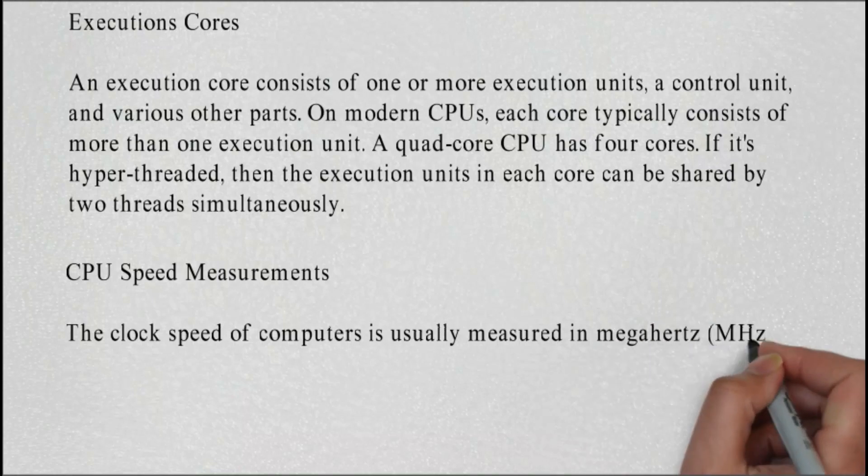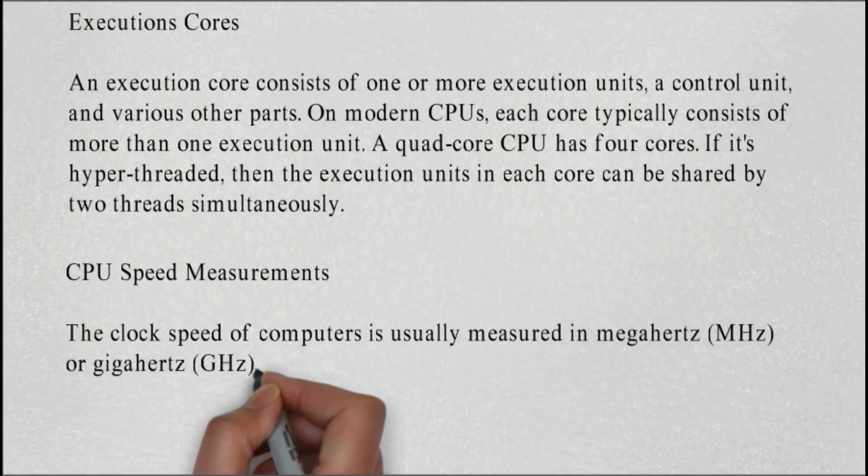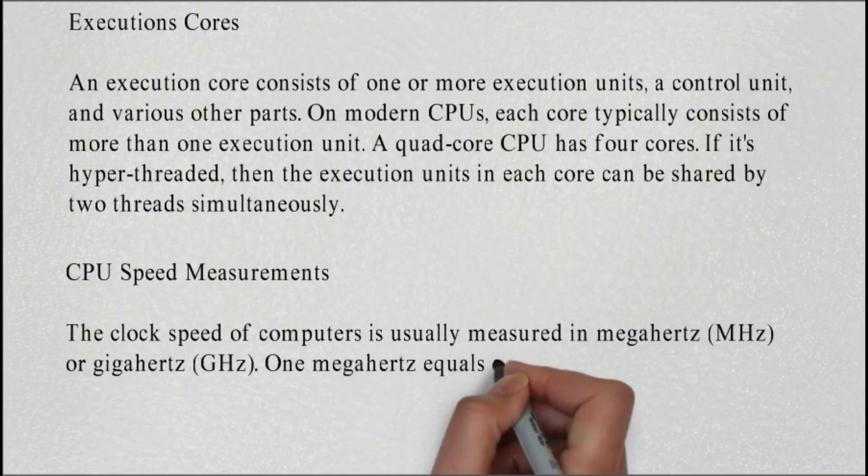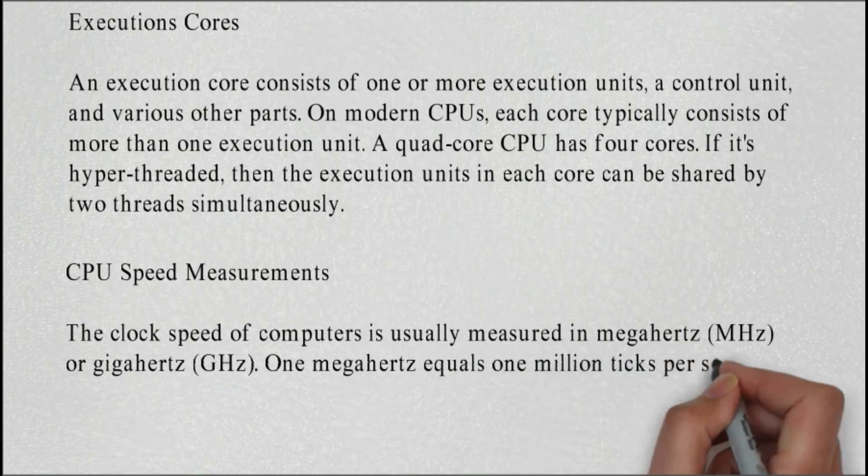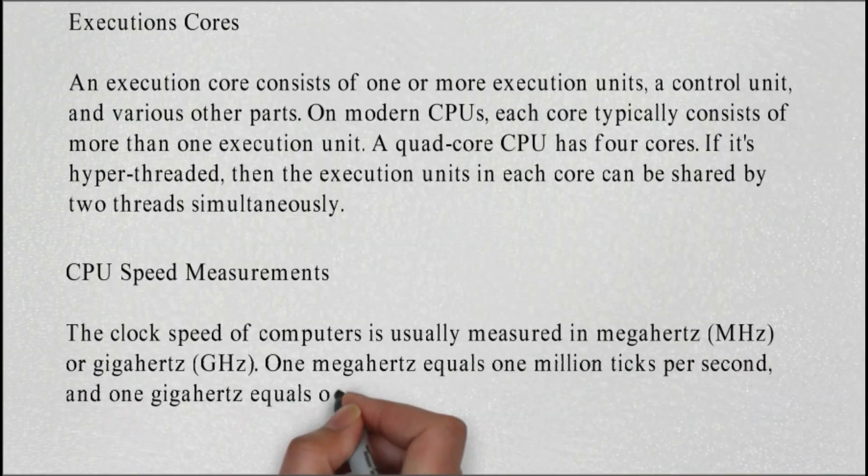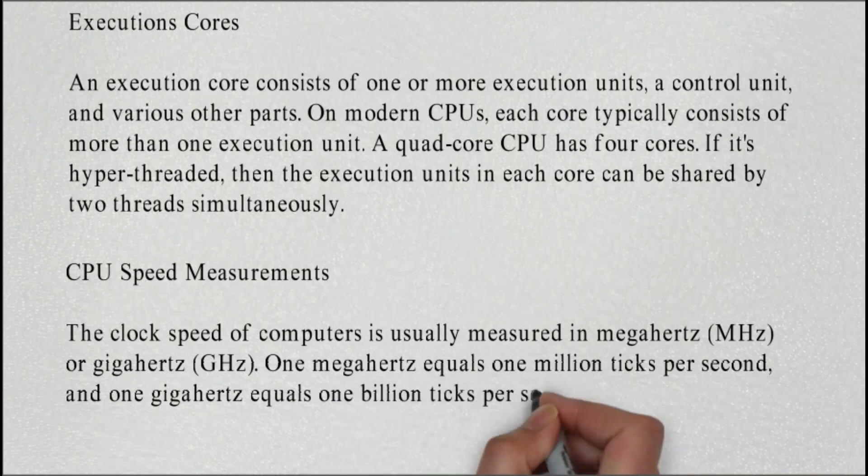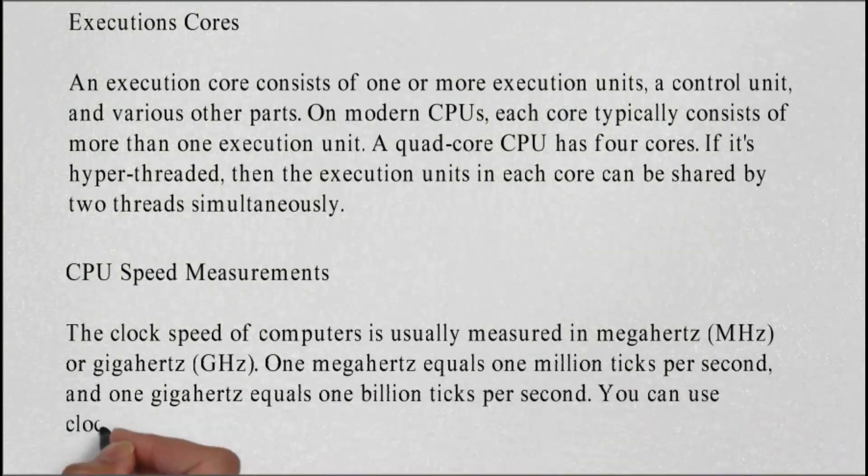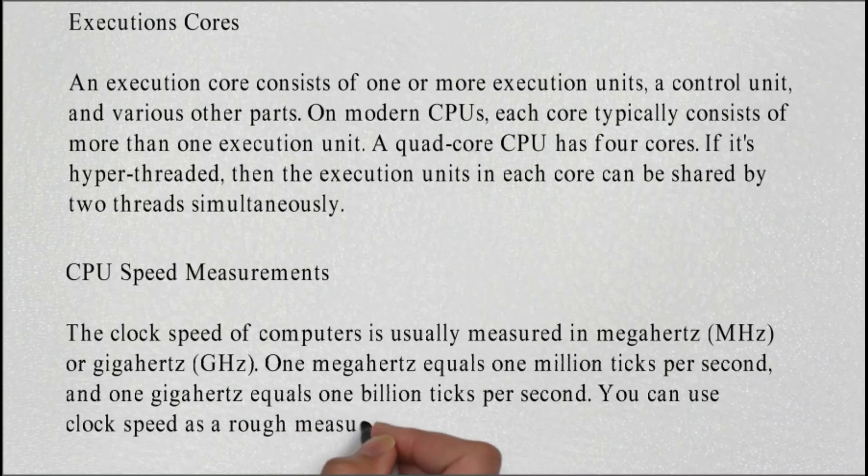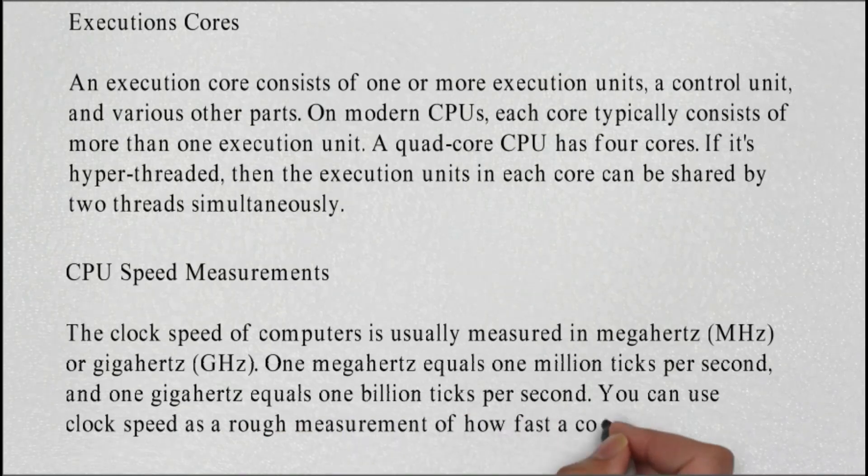CPU speed measurements: the clock speed of computers is usually measured in megahertz (MHz) or gigahertz (GHz). One megahertz equals one million ticks per second and one gigahertz equals one billion ticks per second. You can use clock speed as a rough measurement of how fast a computer is.